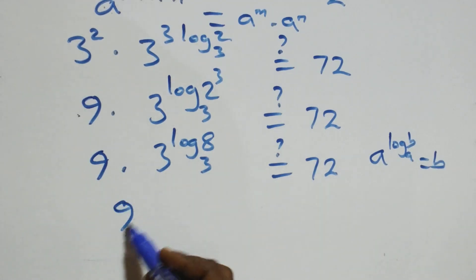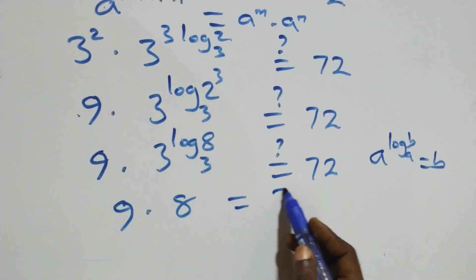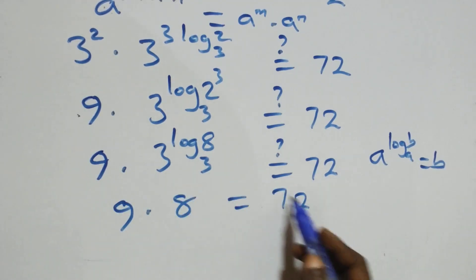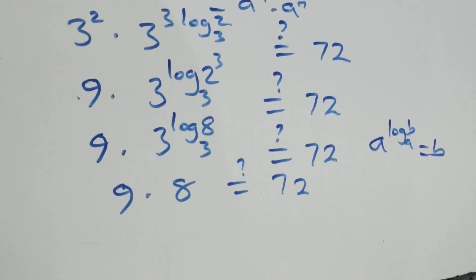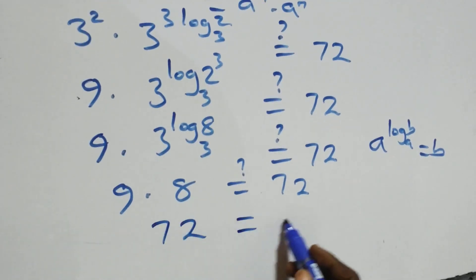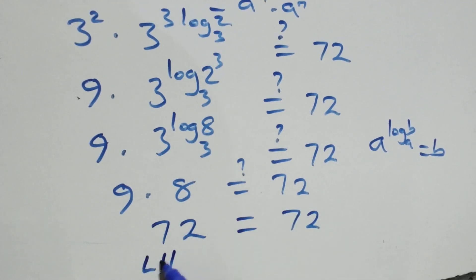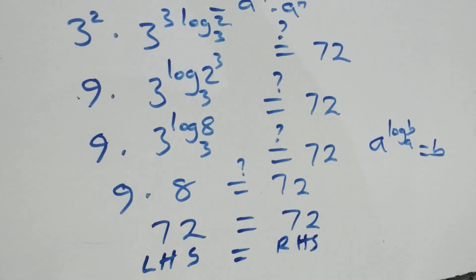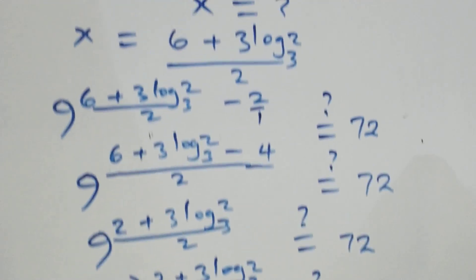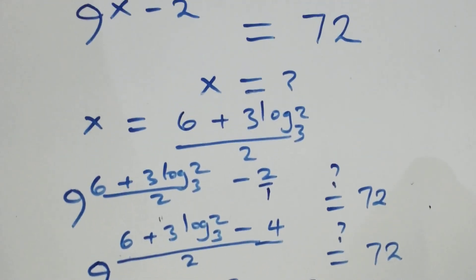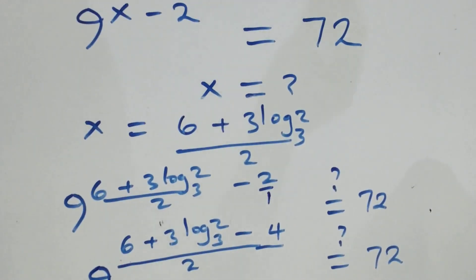And of course 9 times 8 gives us 72, which equals 72. That is, the left-hand side equals the right-hand side. Therefore we conclude that x equals (6 + 3·log₃ 2) / 2 satisfies this given problem.